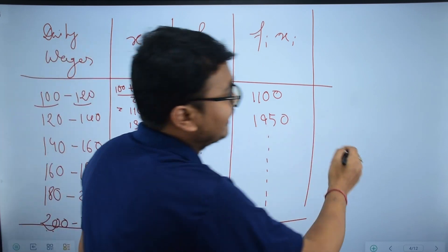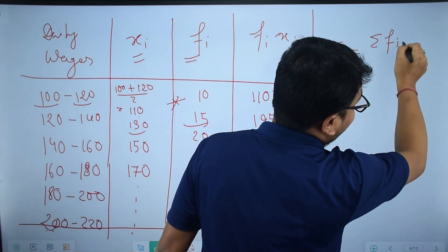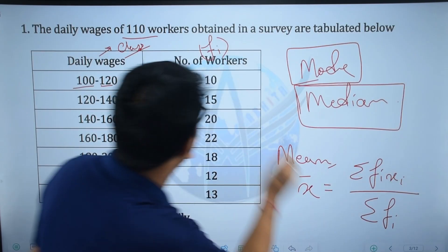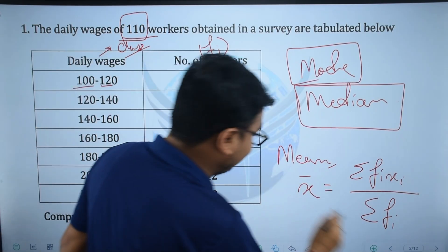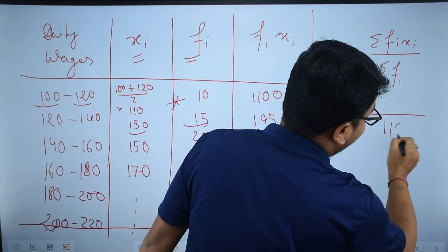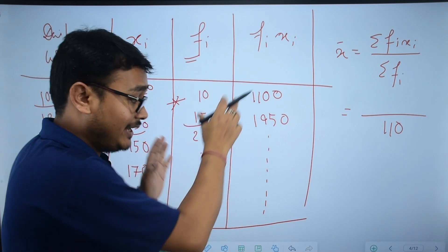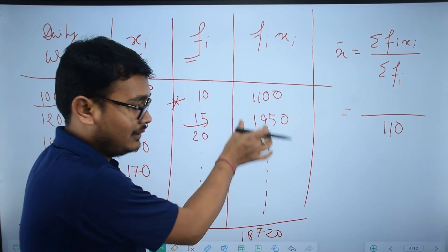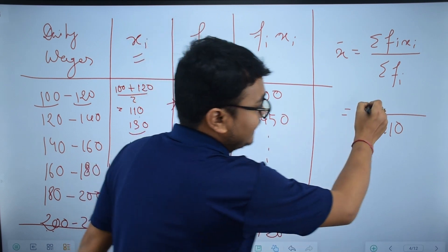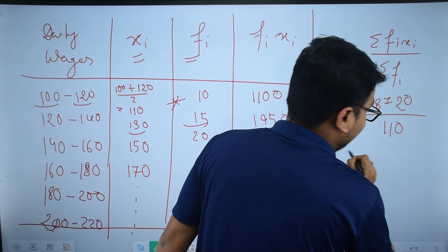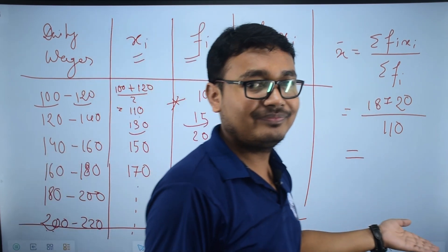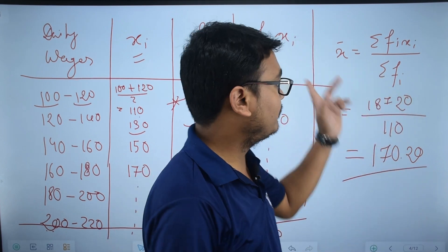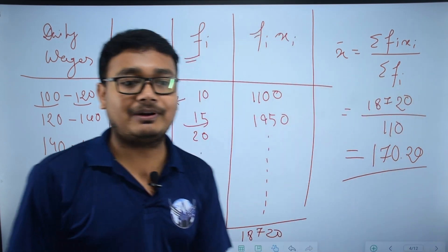So x̄ = summation of fi·xi divided by summation of fi. Summation of fi is 110, since 110 workers are given. Summation of fi·xi comes to 18720. So x̄ = 18720 ÷ 110 = 170.20. Therefore mean value x̄ equals 170.20.